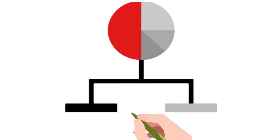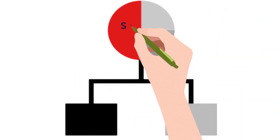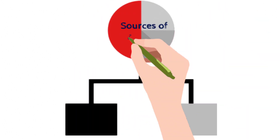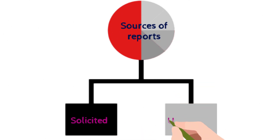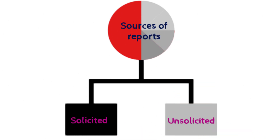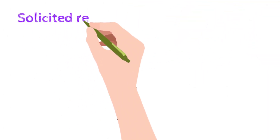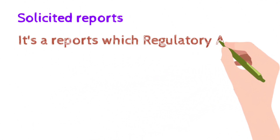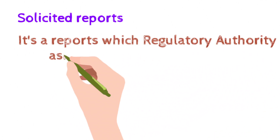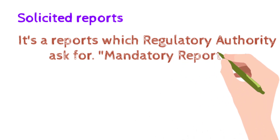Now let's discuss what are the sources of reports. In Pharmacovigilance, we generally receive reports from solicited sources and unsolicited sources. A solicited report is one which the regulatory authority asks for, meaning it is mandatory to submit this report.